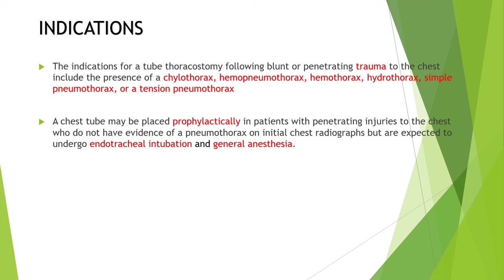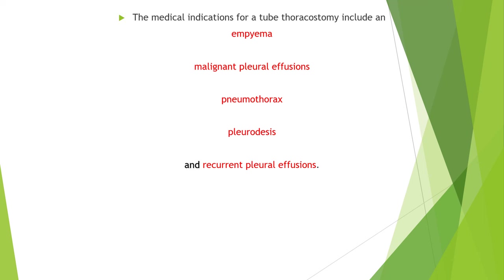Indications for tube thoracostomy following blunt or penetrating trauma include presence of chylothorax, haemopneumothorax, haemothorax, hydrothorax, simple pneumothorax, or tension pneumothorax. A chest tube may be placed prophylactically in patients with penetrating injuries to the chest who do not have evidence of pneumothorax on initial chest radiograph but are expected to undergo endotracheal intubation and general anesthesia. Medical indications include empyema, malignant pleural effusion, pneumothorax, pleural disease, and recurrent pleural effusions.